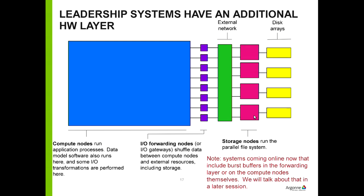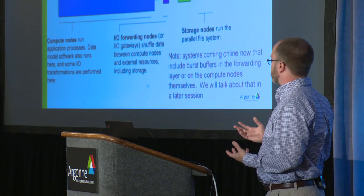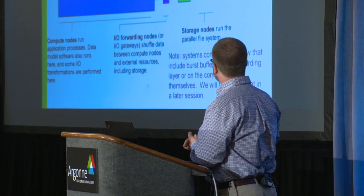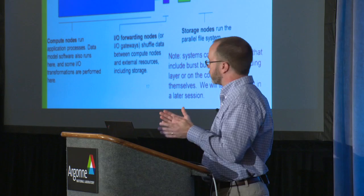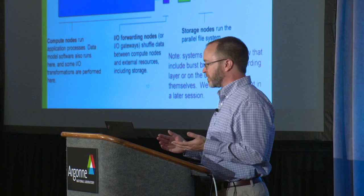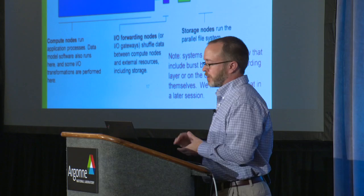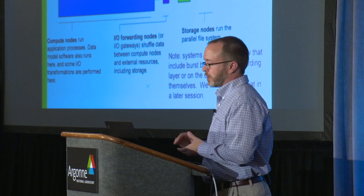Beyond the storage nodes are large disk arrays — big cabinets with many drives, not single disks. This architecture is representative of today's big HPC systems, but within a year another layer will appear: a burst buffer. The idea is to place some storage resources closer to your compute nodes to avoid traversing the full path every time you access data.